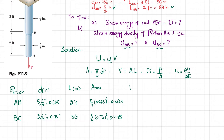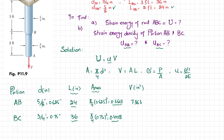Now finding the volume of each portion. Volume equals area times length. For AB: 24 times 0.3068 gives a volume of 7.363 cubic inches. For BC: 36 times 0.4418 gives a volume of 15.904 cubic inches.